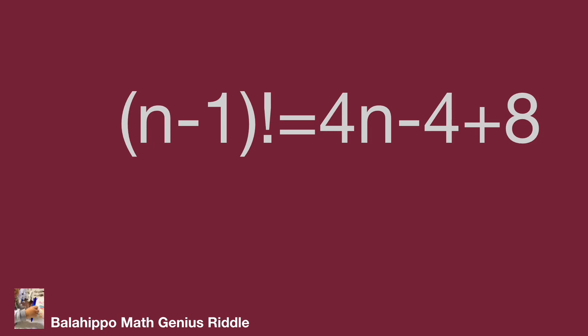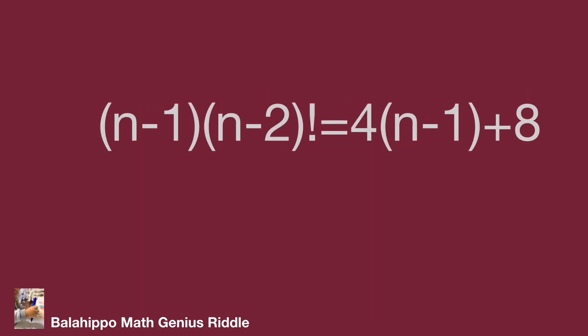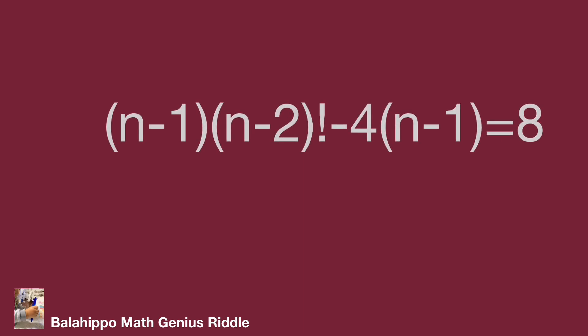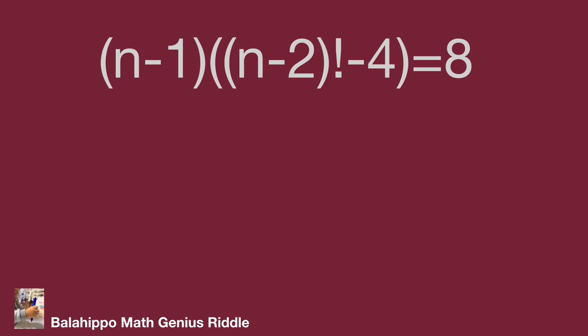Next, distribute 4 on the right side as 4 times (n minus 1) plus 8, to generate an (n minus 1) factor. Then rewrite (n minus 1) factorial as (n minus 1) times (n minus 2) factorial on the left, and the right side as 4 times (n minus 1) plus 8. Moving 4(n minus 1) to the left side and factorizing gives: (n minus 1) times [(n minus 2) factorial minus 4] equals 8.